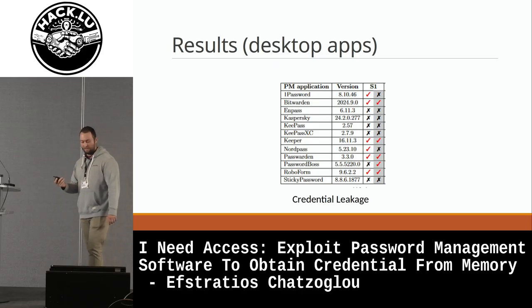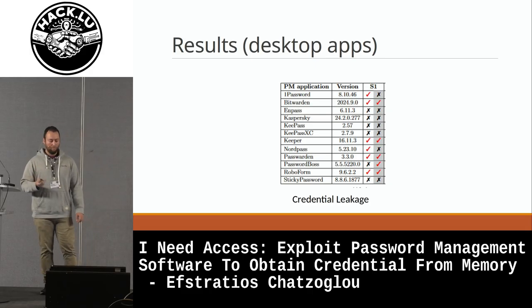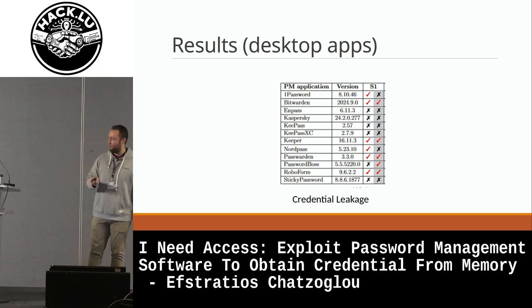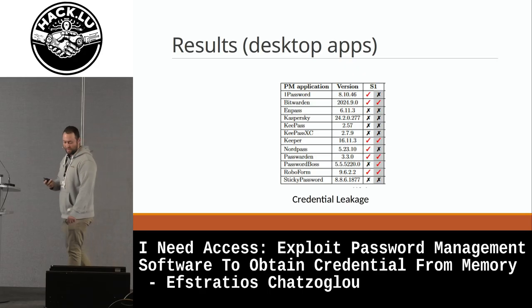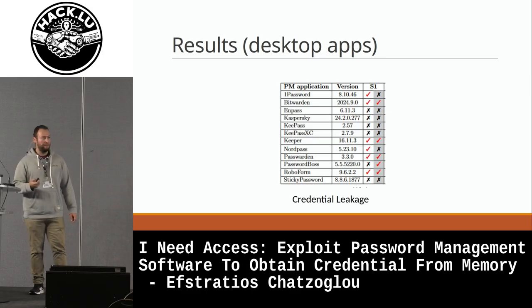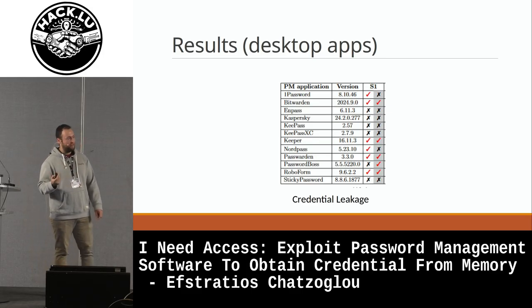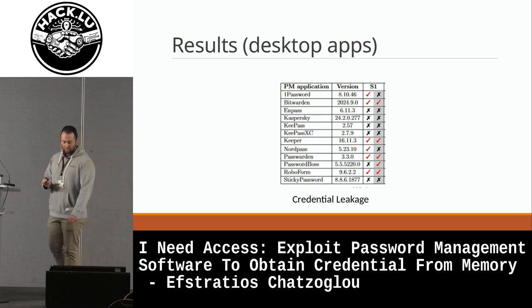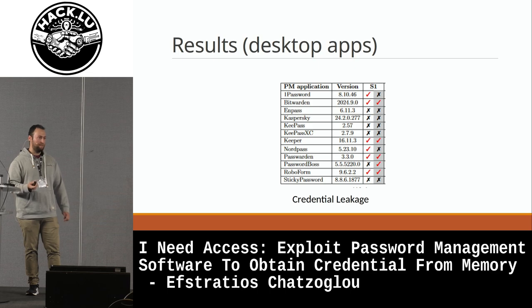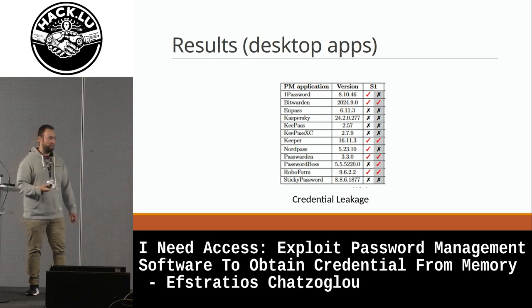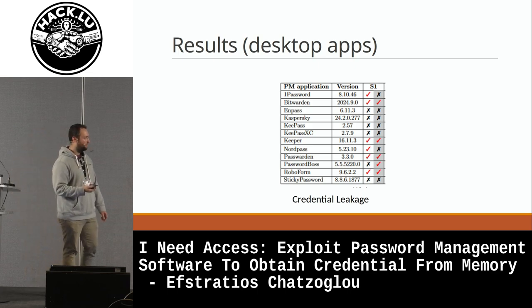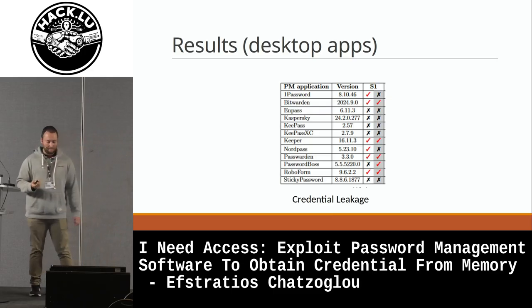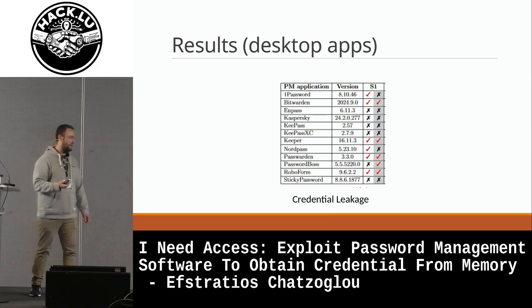Here are the results regarding the desktop apps. The column with S1 noted is the first scenario. The left-side column without the grayed-out area is about the master credentials, and the right one with the grayed-out area is about the entries. As we can see, popular password management software can leak their information in plaintext format within their process. On the positive side, we have some cases where there is no leakage.